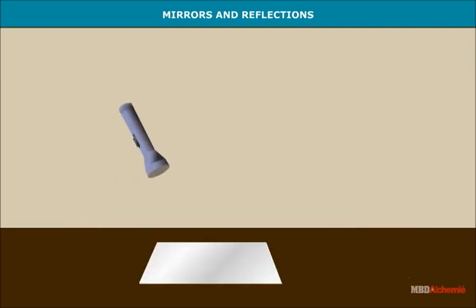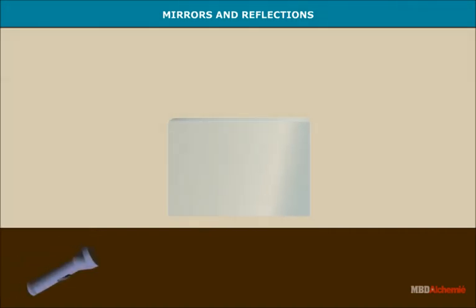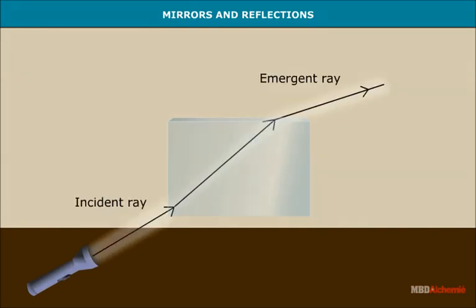When light falls on an object, it is divided into two parts. Part of the light passes through the medium and changes its path. This phenomenon, that is, the passing of light through a medium with a changed path, is called refraction of light. Part of the light goes back to the same medium; the sending of light back to the medium by the object is called reflection of light.